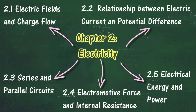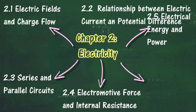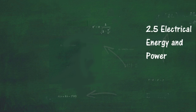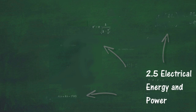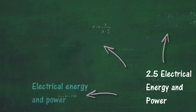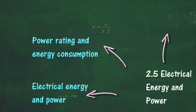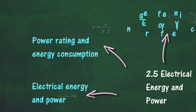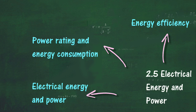At the end of this chapter, Section 2.5, we will learn about electrical energy and power. At the end of this section, you should be able to define electrical energy, define electric power, solve problems involving electrical energy and power, compare power rating and energy consumption of various electrical appliances, and describe ways of increasing energy efficiency.